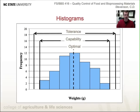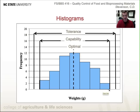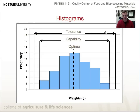Another diagram is the histogram. We put a data characteristic such as weight on the x-axis and frequency on the y-axis to get some sort of distribution. We can identify the optimal data point, characterize what the process is capable of, and identify tolerances. We'll cover histograms in much more detail later in the semester.